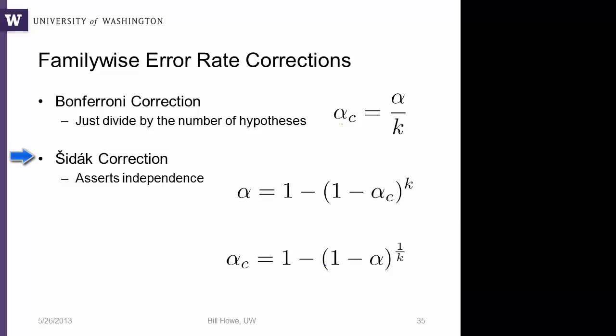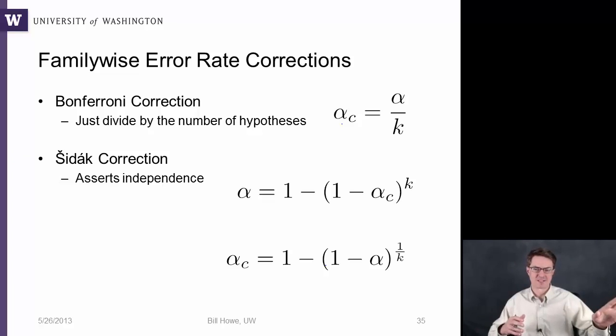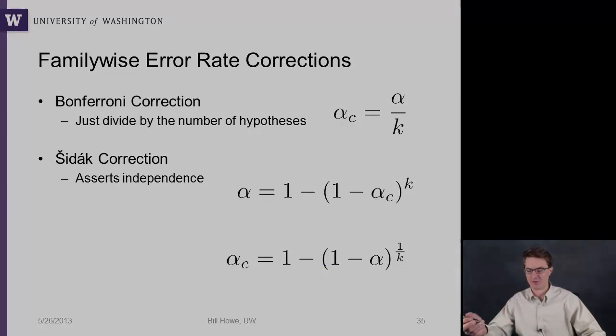Another correction is the Sidak correction, which has this extra condition where the tests need to be independent. Even though we talked about in the last slide that in order to make that plot we were assuming they were independent, the Bonferroni correction in general does not need to assume that. If you're doing hypothesis tests that are related to each other, you can still do the Bonferroni correction. However, to derive this Sidak correction, we're going to rely on the fact that we multiply the probabilities together. Whenever you see probabilities being multiplied together, that means you're assuming they're independent.